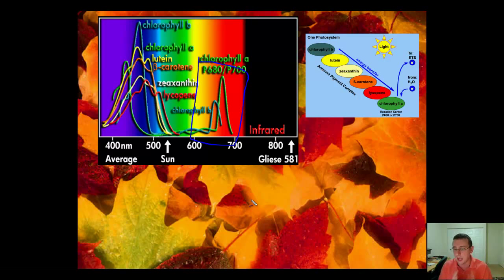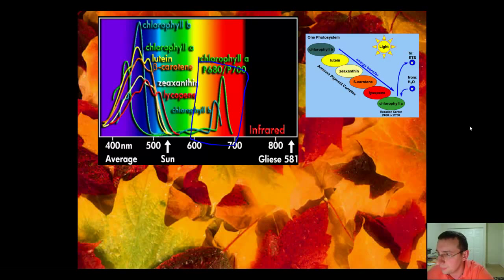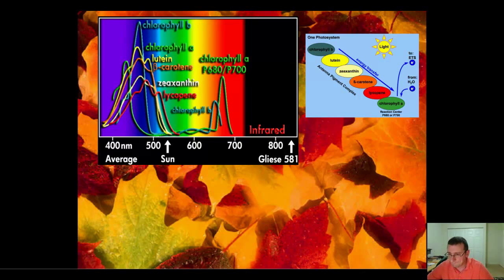Accessory pigments are basically capturing different amounts of light energy and sending them all in together to capture as much light as possible. We'll pick it up from here in the next video.